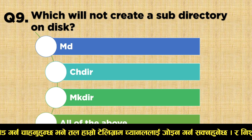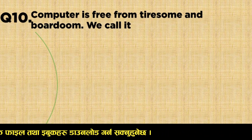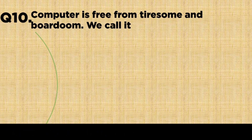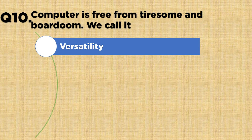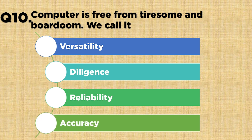Question number ten: a computer is free from tiredness and boredom — we call it Option A: Personality, Option B: Diligence, Option C: Reliability, Option D: Accuracy. The correct answer is Option B: Diligence.